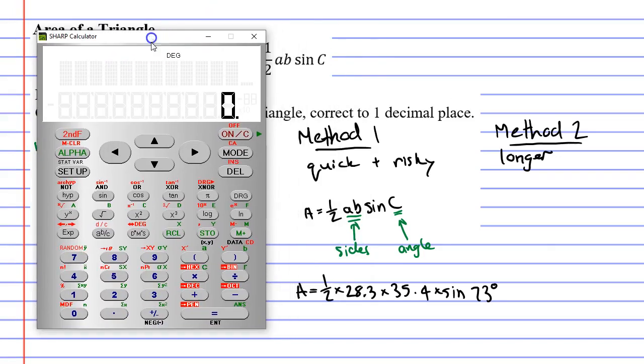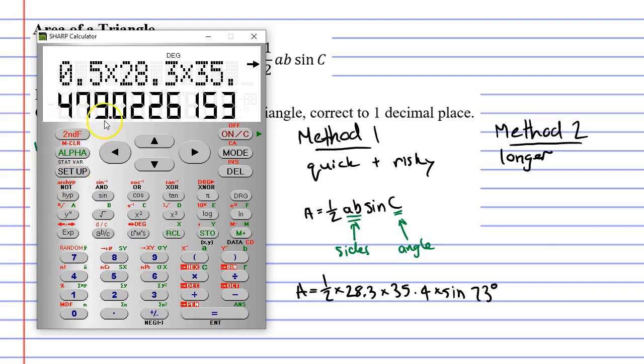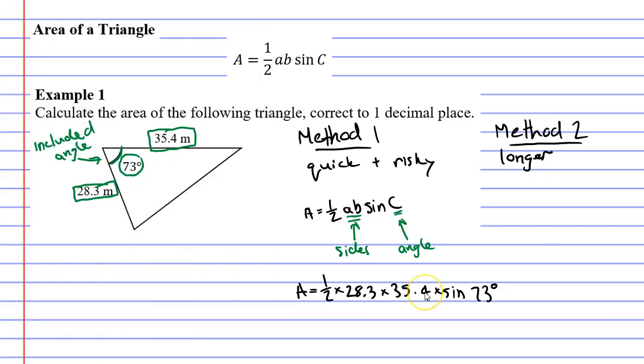Bringing up our calculator we can now work this out. We start with half. I like to cheat. I like to go 0.5 which is easier to type in, times 28.3 times 35.4 times sine of 73 degrees. And we get 479 point - it wanted it correct to one decimal place so we'll say 479.0 meters squared. This is area.